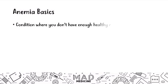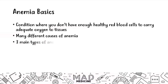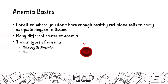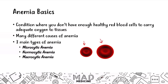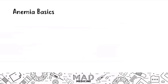Anemia is a condition where you don't have enough healthy red blood cells to carry enough oxygen to tissues. There are many different causes of anemias. You have three main types: microcytic anemias, which is a small red blood cell; normocytic anemia, where the red blood cell is a normal size; and macrocytic anemias, which we're going to start talking about now, in which the red blood cell is going to be large.